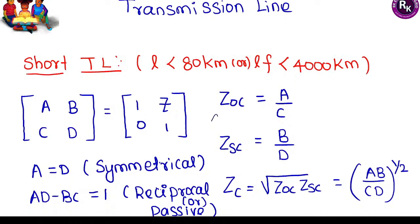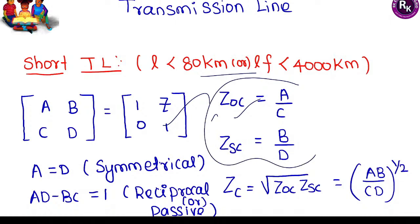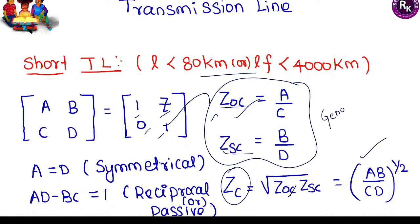Types of transmission lines: short transmission line — its length, ABCD parameters, and open circuit/short circuit impedance formulas are defined. The general formula for any transmission line gives characteristic impedance as the square root of the geometric mean of open circuit impedance and short circuit impedance. For short transmission line, substitute the ABCD parameters into this general formula to find characteristic impedance.